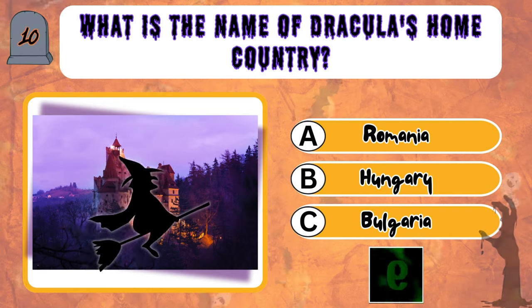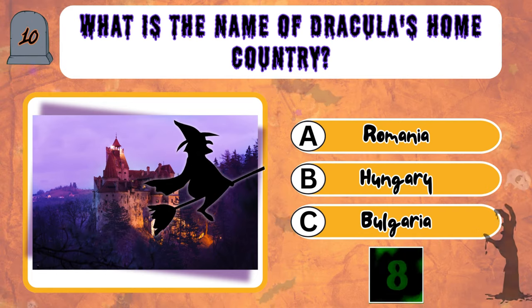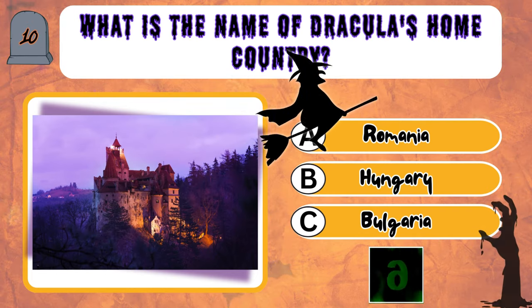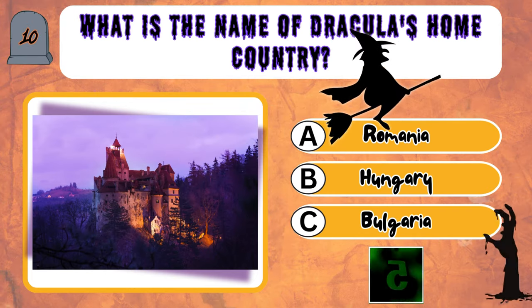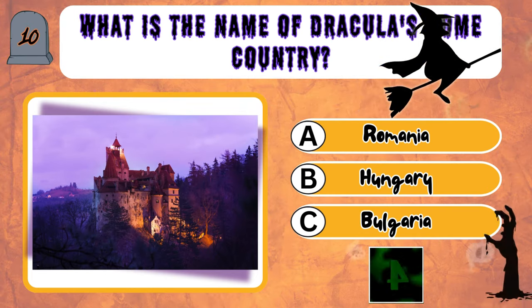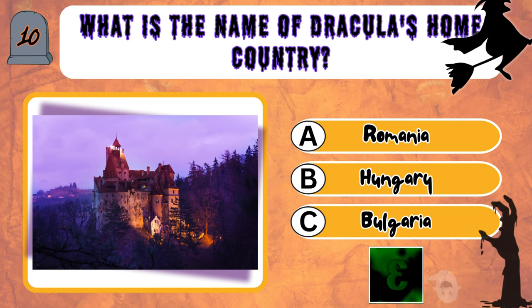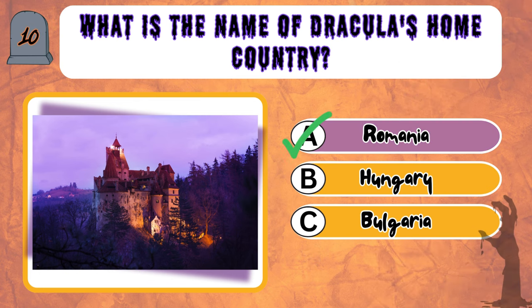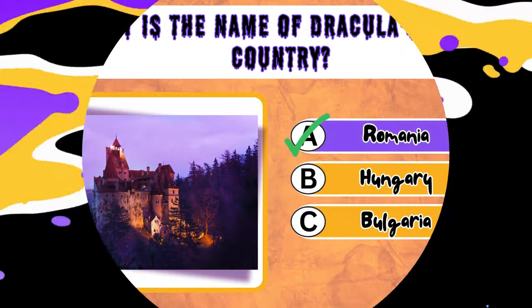What is the name of Dracula's home country? A, Romania. B, Hungary. C, Bulgaria. Correct — it's Romania. Please give us a like if you're enjoying this quiz.